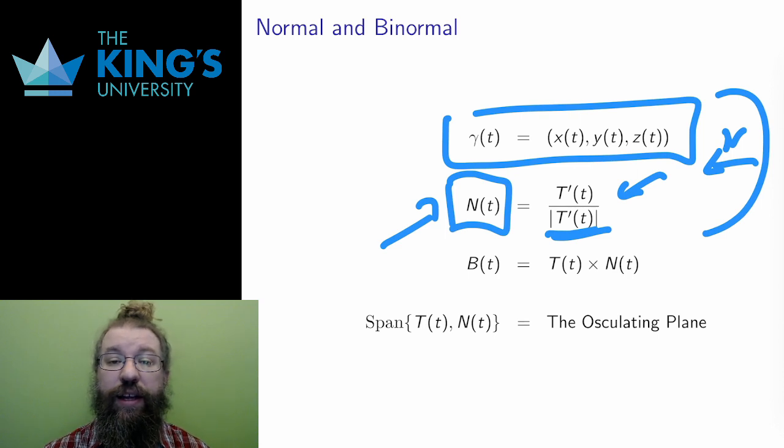Finally, I can calculate a third unit vector. The binormal B is the cross product of the unit tangent and the normal which I just defined, which is also a unit vector.